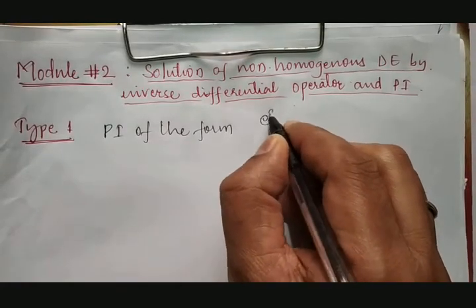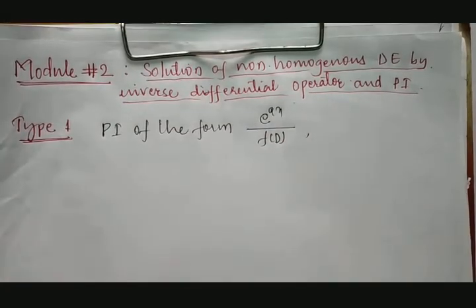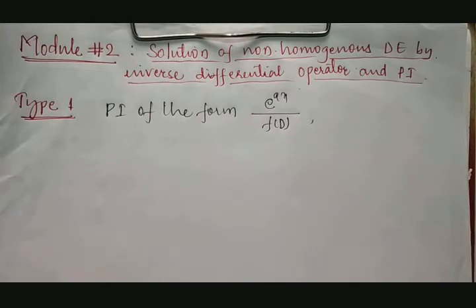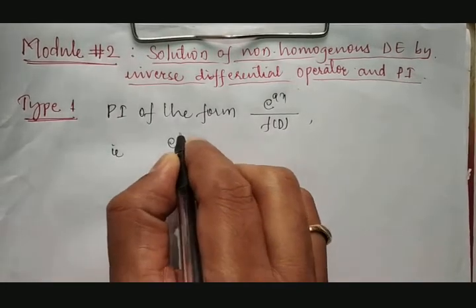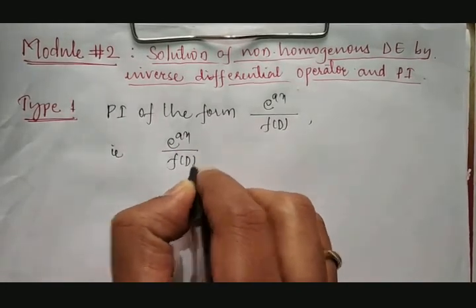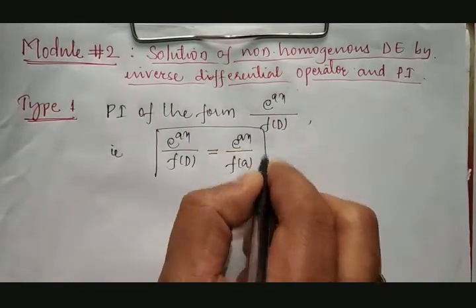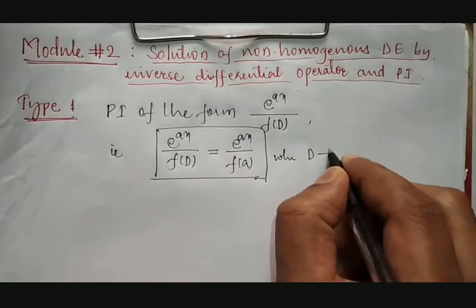The exponential will be given as e raised to ax divided by f(D). The solution for this particular integral uses the formula: e^(ax) / f(D) = e^(ax) / f(a), where D is replaced by a. Whenever we take a non-homogeneous differential equation, we first calculate the complementary function, then the particular integral, and together they form the general solution.